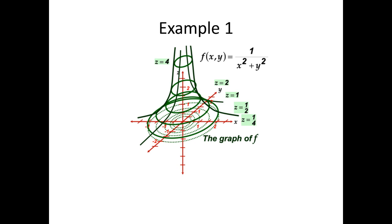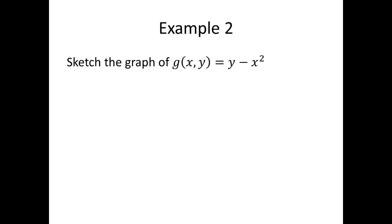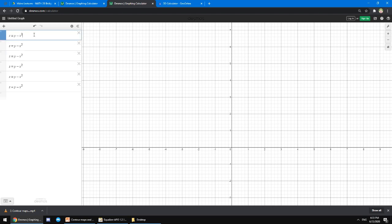Now, let's have another example. Sketch the graph of g(x,y) equals y minus x². There are no indicated values of z, so we can just use whatever we want. Again, we go back to Desmos. Input z equals y minus x². And then, we replace values of z.